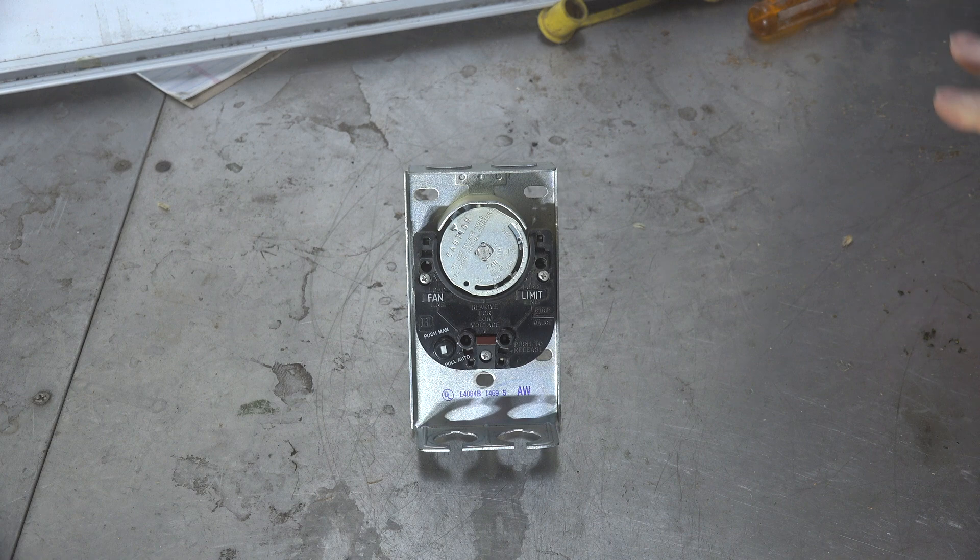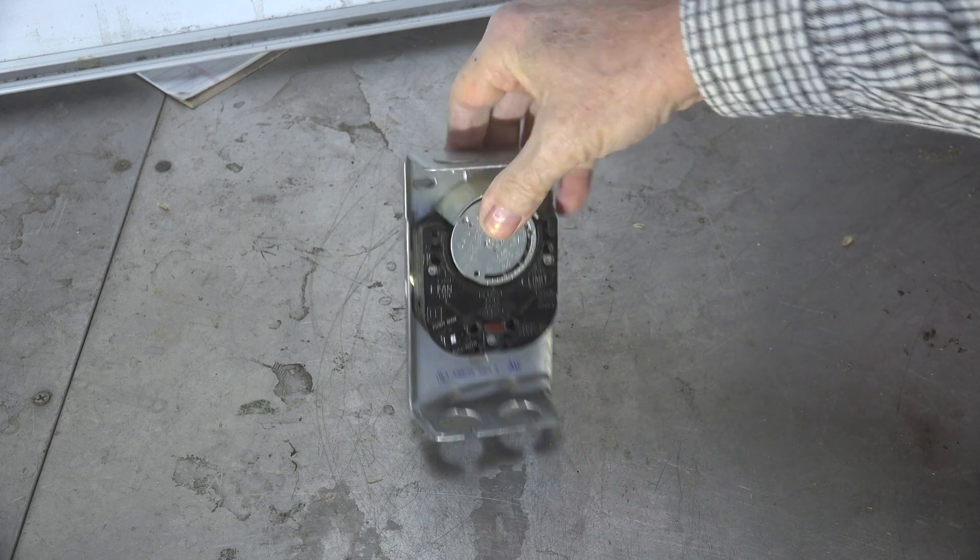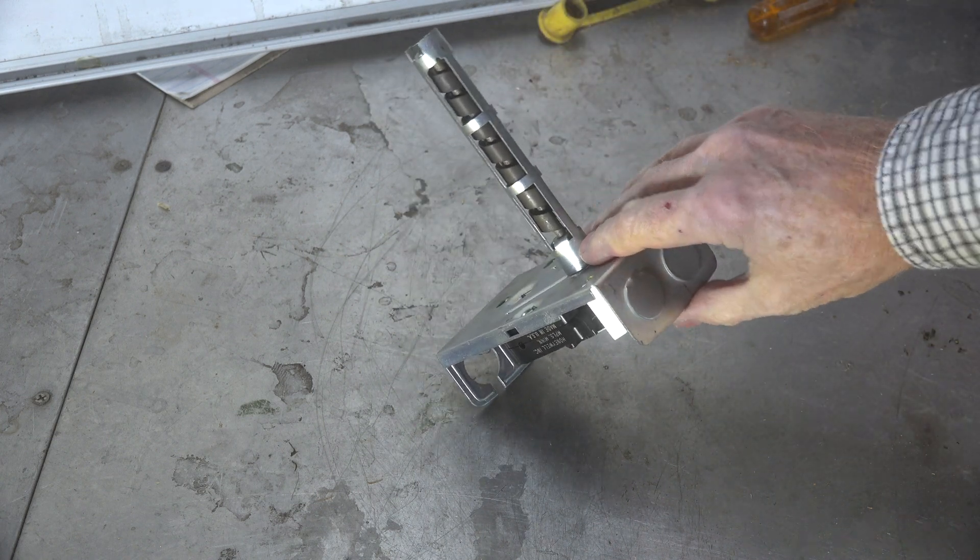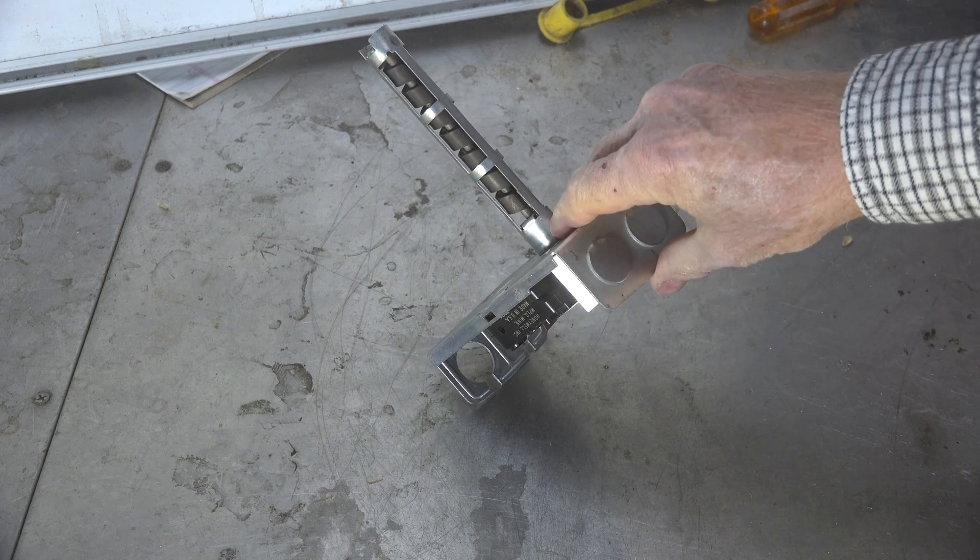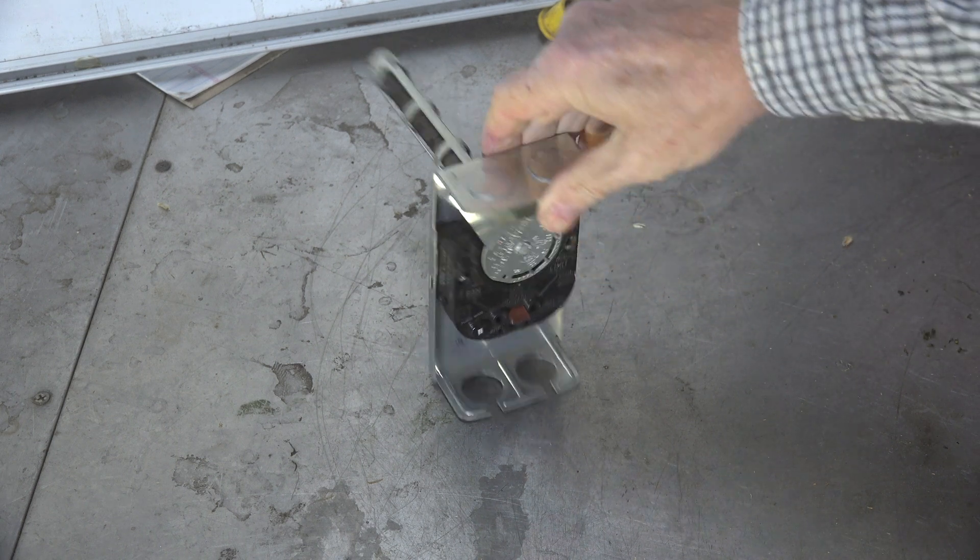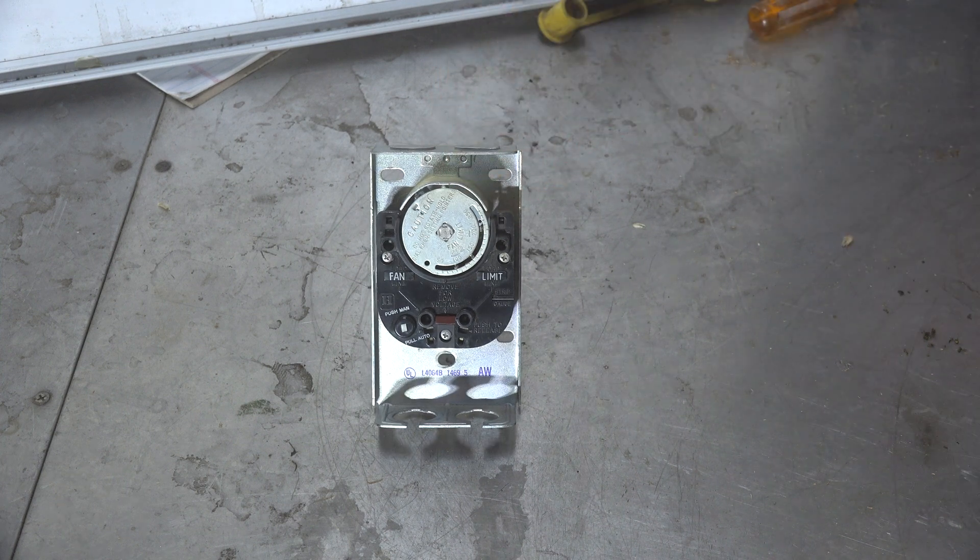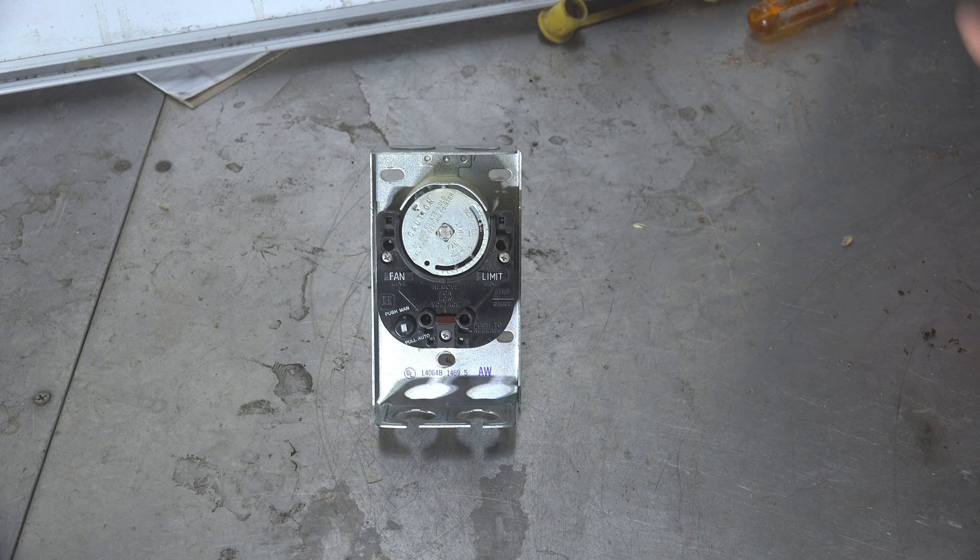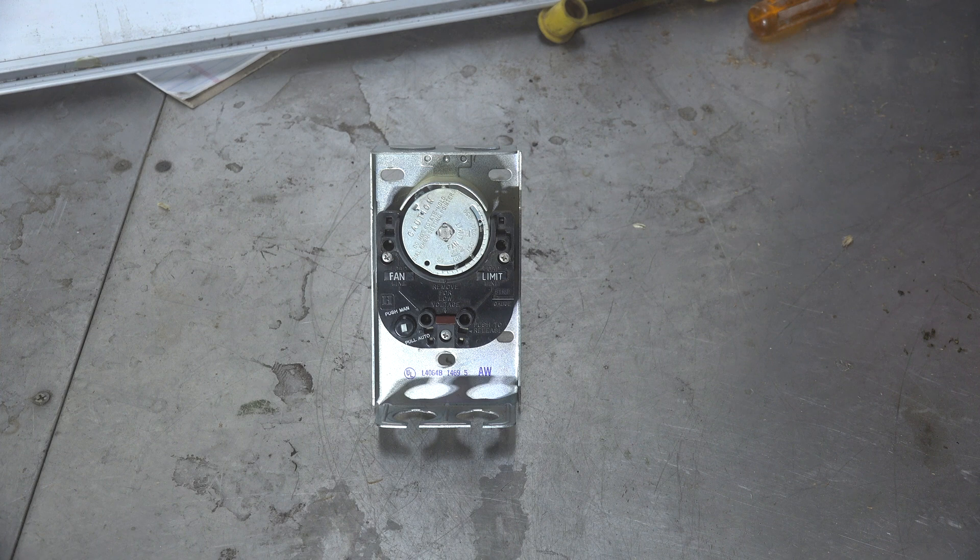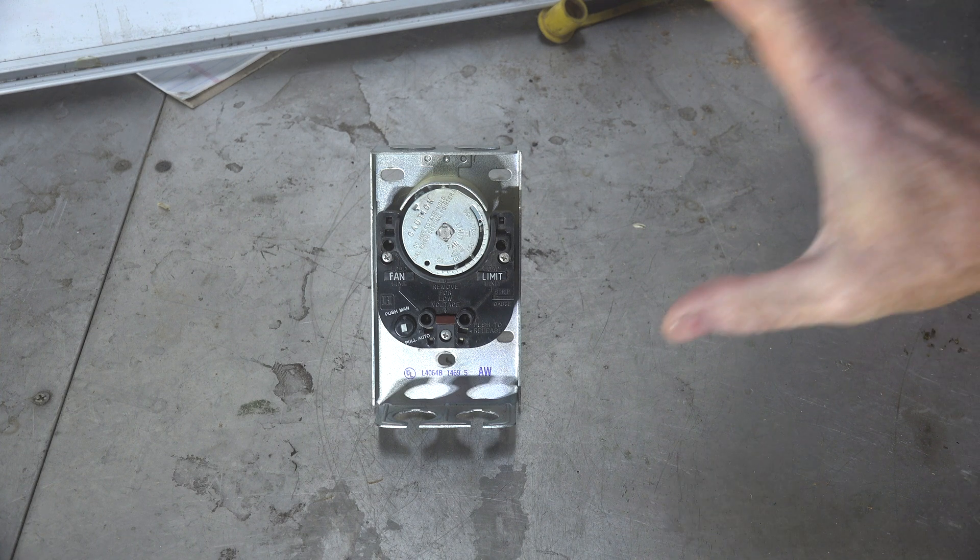They have a probe on them. The probe could be anywhere from five inches to eleven and a half inches depending on the model, and it senses the temperature inside the heat exchanger.